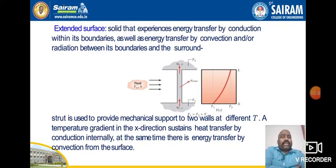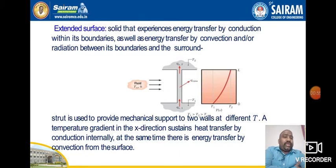For example, in an IC engine body, it might have extended surfaces. The purpose of extending those surfaces is that, according to Newton's law of cooling, if you increase the area, the rate of heat transfer increases. The equation itself says Q = hA·ΔT, where A is the surface area. As surface area increases, obviously the rate of heat transfer also increases.